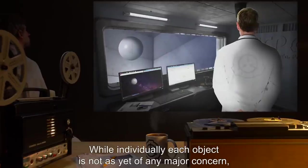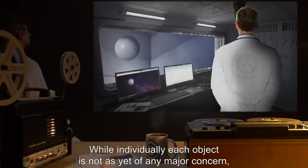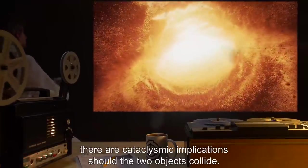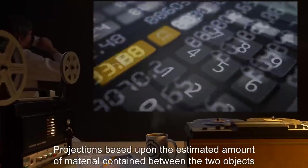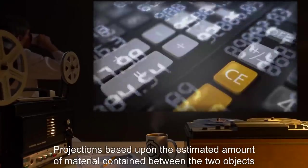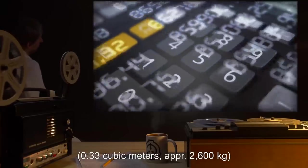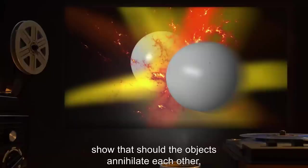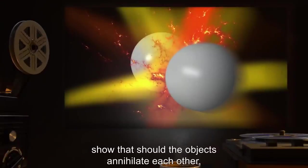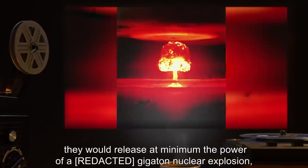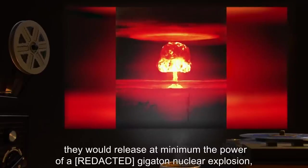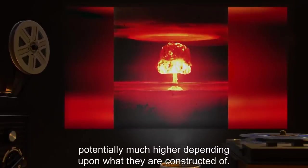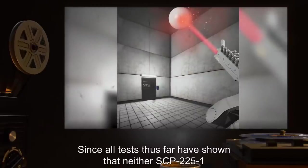While individually each object is not as yet of any major concern, there are cataclysmic implications should the two objects collide. Projections based upon the estimated amount of material contained between the two objects—0.33 cubic meters or approximately 2600 kilograms—show that should the objects annihilate each other, they would release at minimum the power of a gigaton nuclear explosion, potentially much higher depending upon what they are constructed of.